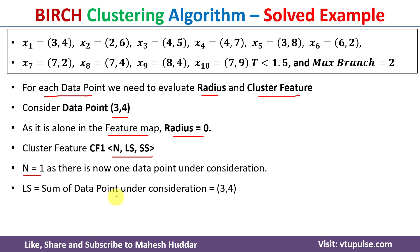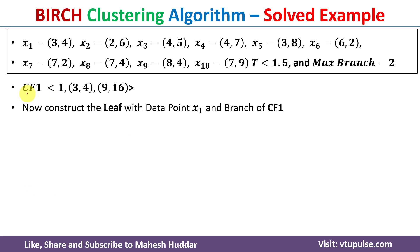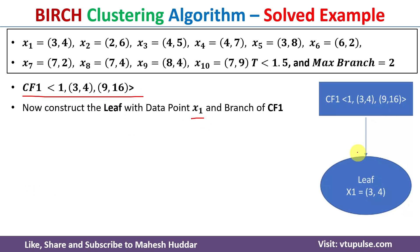LS is the linear sum of points under consideration. Since we have only one data point, LS = (3, 4). SS is the squared sum; with one data point, SS = (3×3, 4×4) = (9, 16). So cluster feature CF1 = (N=1, LS=(3,4), SS=(9,16)). We then create a tree with CF1 as the root node and x1 as a leaf node.